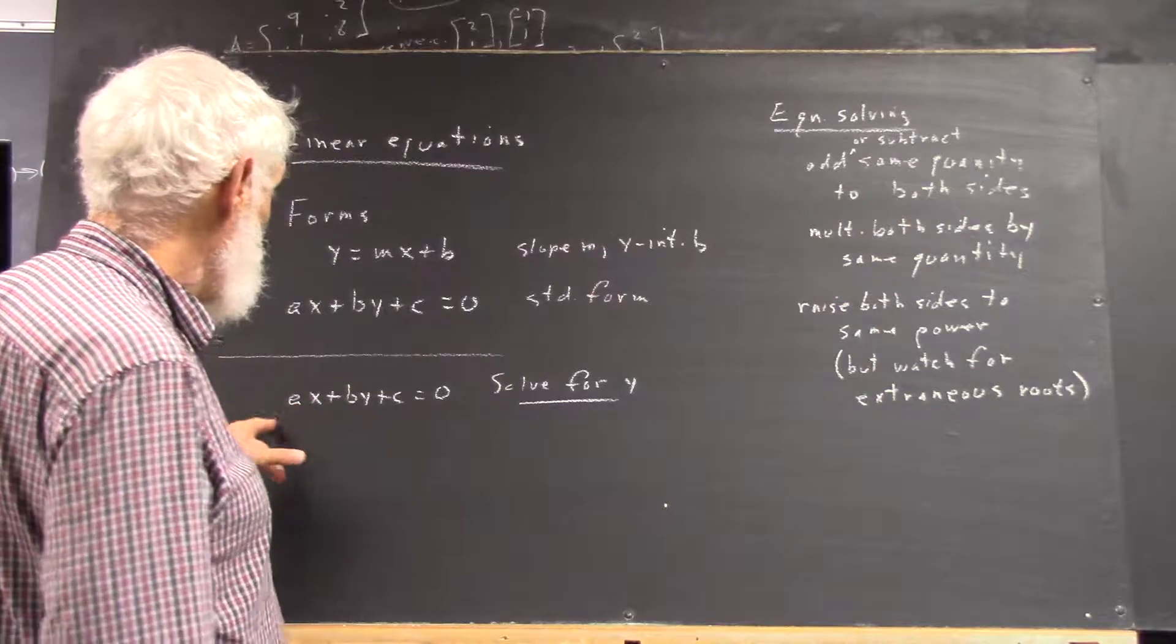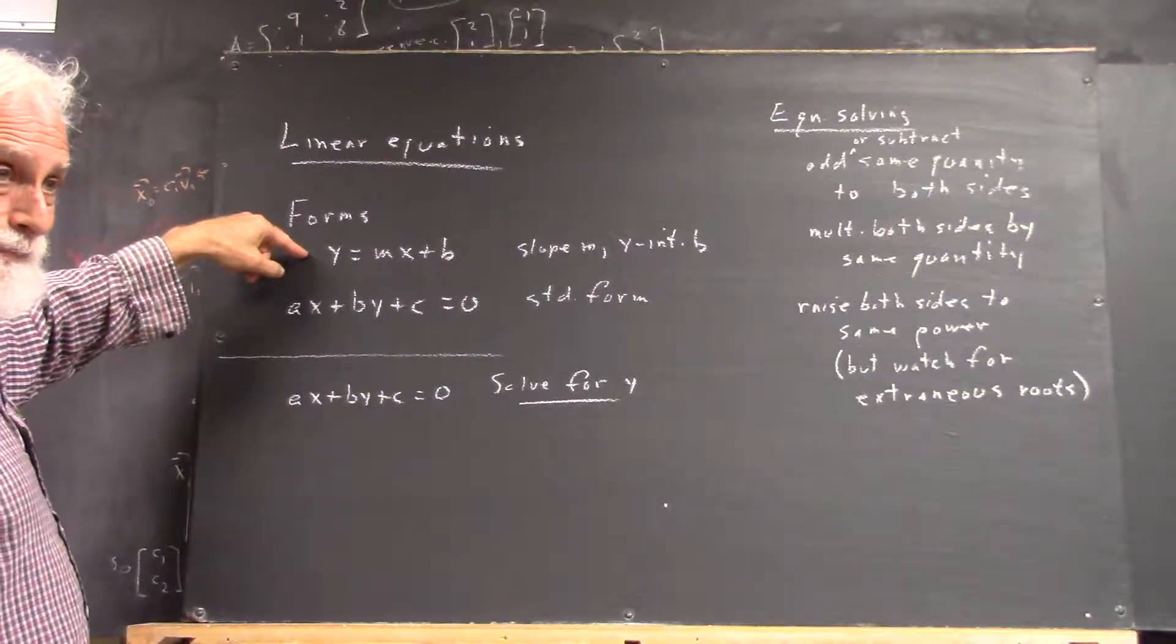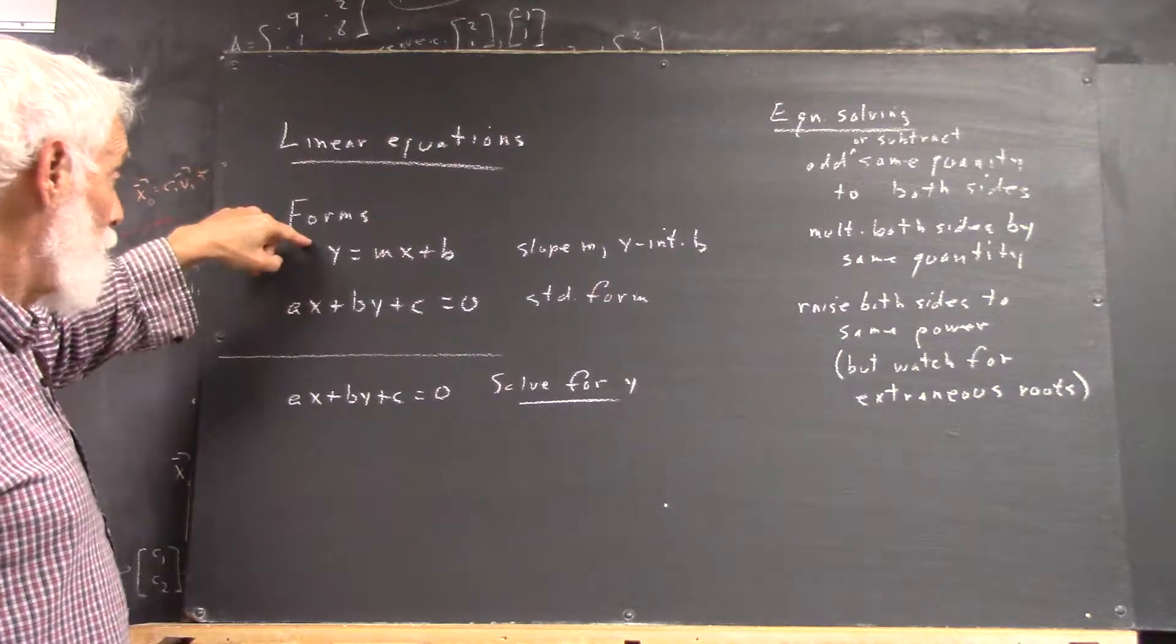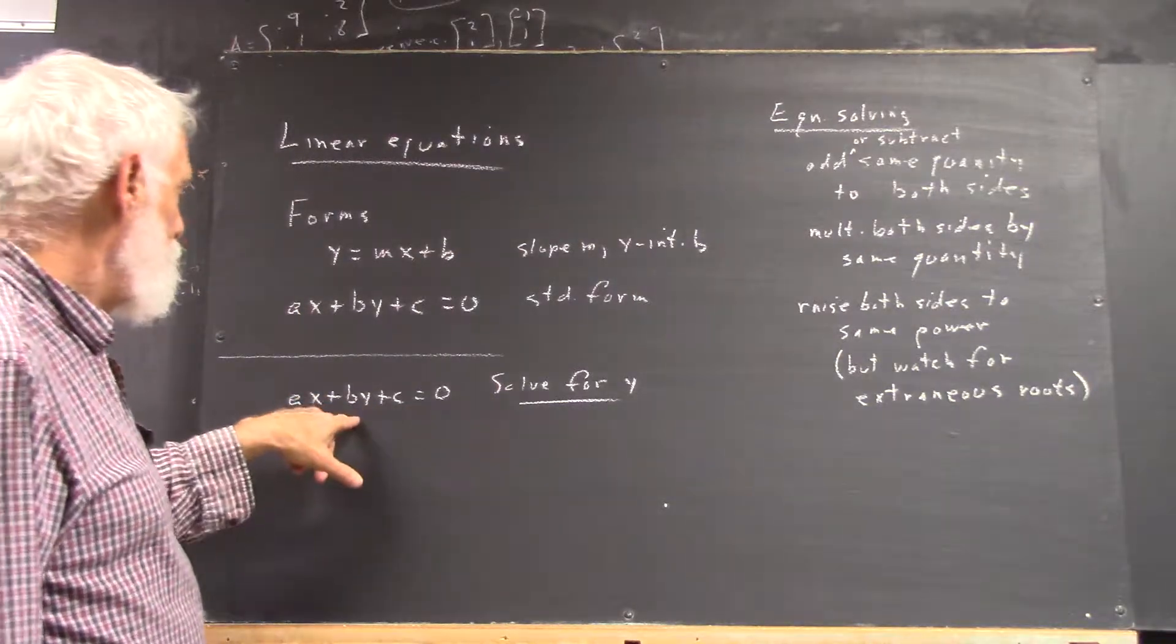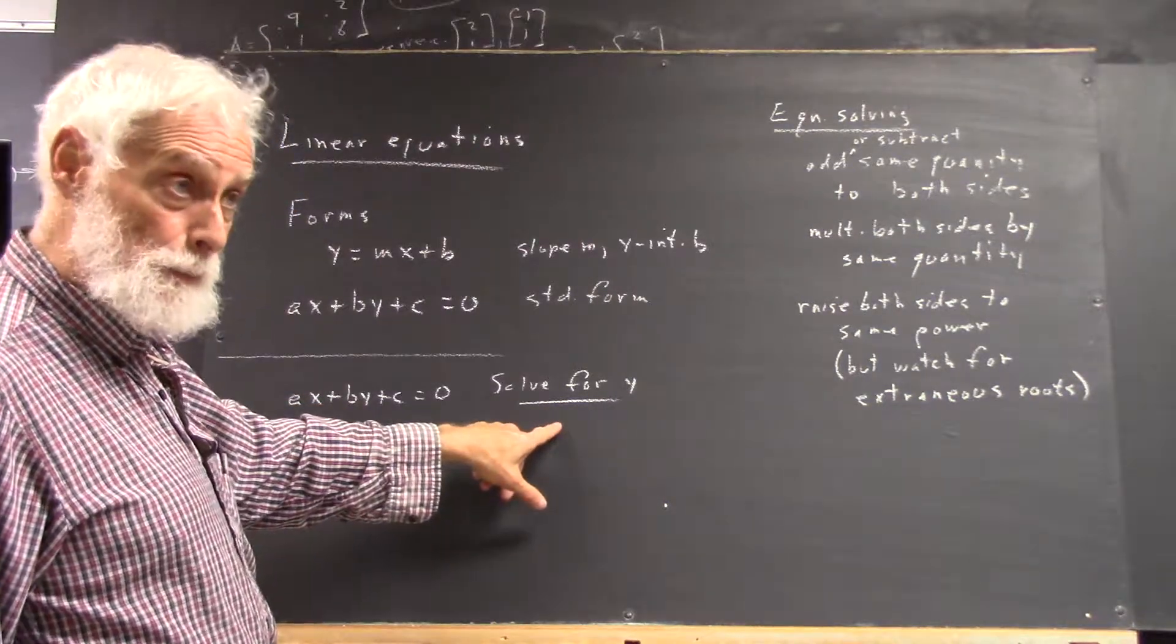So what we want to do is we want to take this and show that if it's this, then it's this. If it's this, it's got to be this. So what we want to do is take this form and solve for y. But we ran into a little bit of a hang-up here.